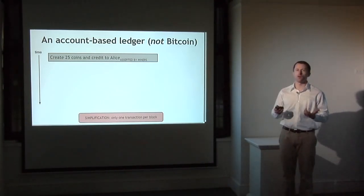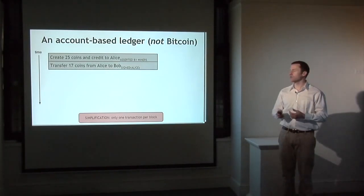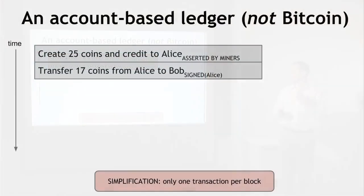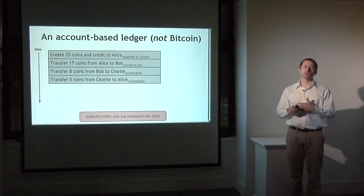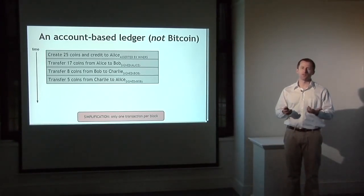In an account-based system, you can add transactions that create new coins and credit them to somebody, and then later transfer them. A transaction would say we're moving 17 coins from Alice to Bob, signed by Alice to authorize it. Backing this up, there'd be some state tracking that Alice received 25 coins in the first transaction, then transferred 17 to Bob, leaving Alice with an account balance of 8 bitcoins. You can then add more transactions: Bob pays some bitcoins to Charlie, Charlie pays some to Alice, and each participant's account value mutates with each new transaction.